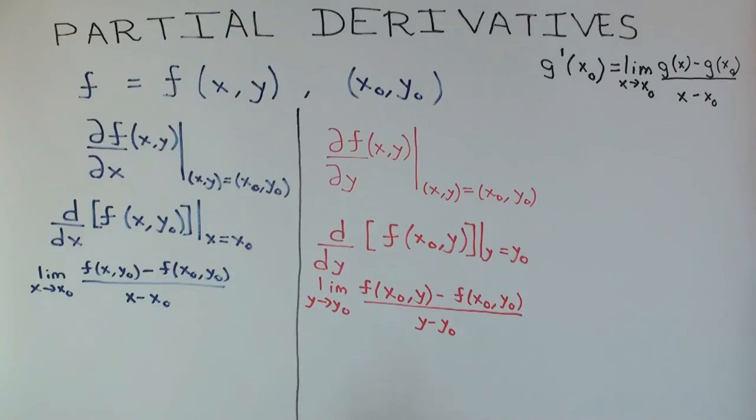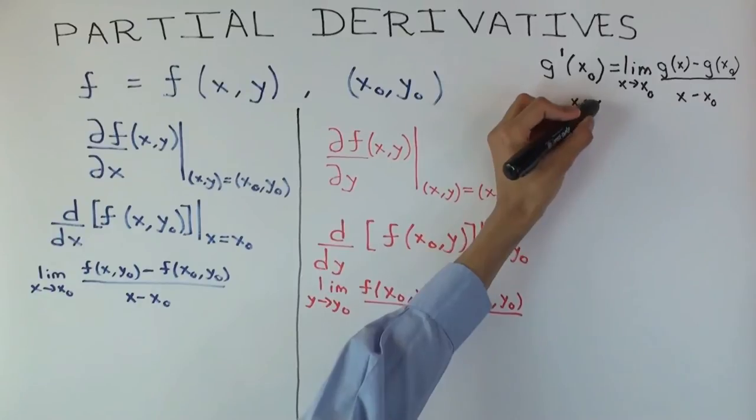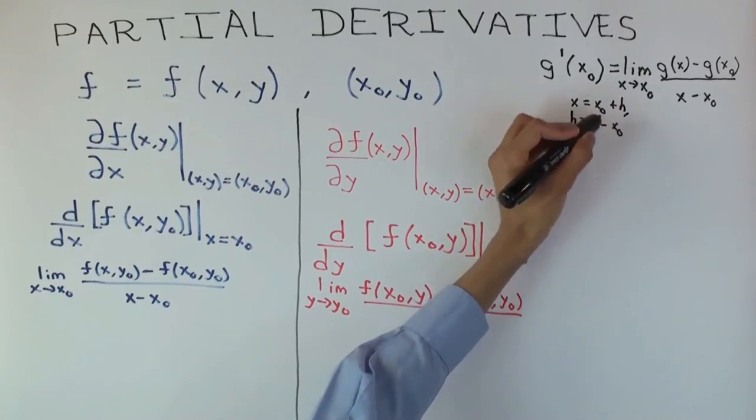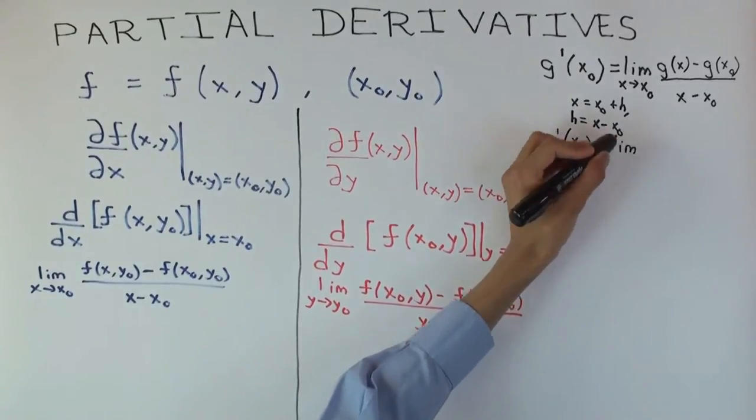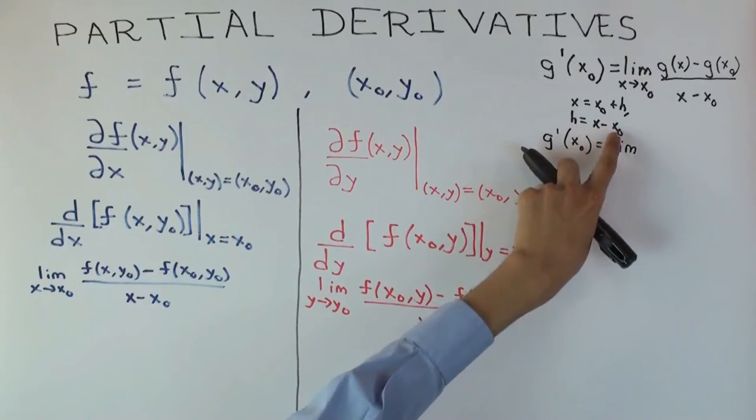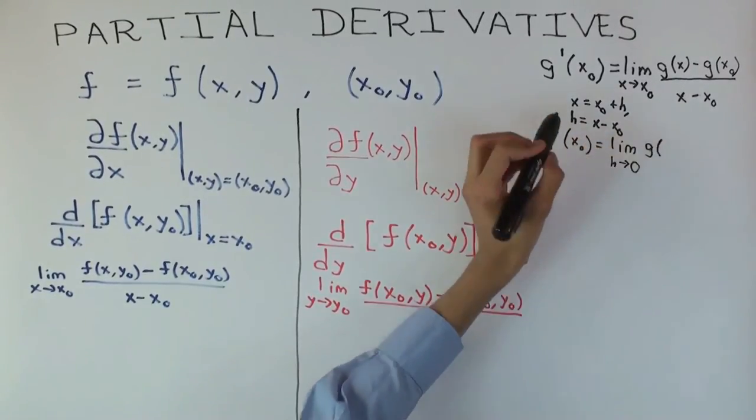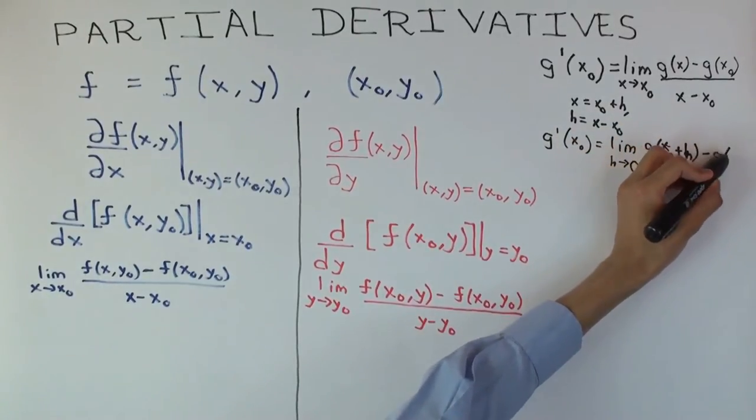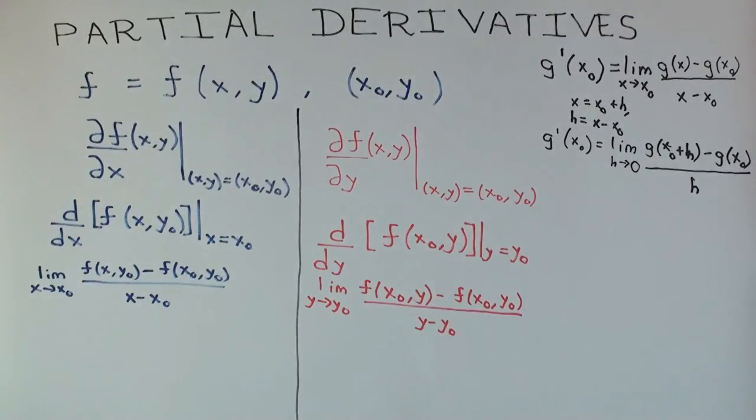We now have the definitions as limits, but we can write this slightly differently. You recall the usual way we write these limits is you write x as x0 plus h, so that h is x minus x0. If you use this notation, then g'(x0) becomes the limit as h approaches 0, since x is approaching x0, h is approaching 0. It's g(x0+h) minus g(x0) over h. We can rewrite both of these in this notation.